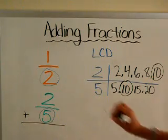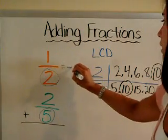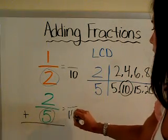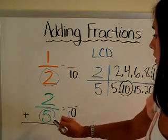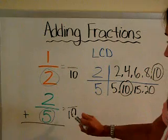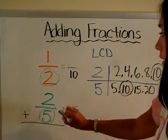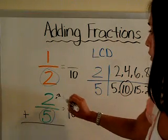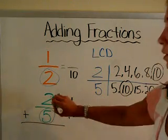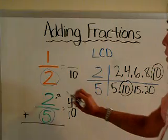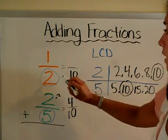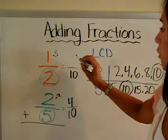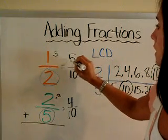So now we're ready to solve our problem. For one-half, we can use the denominator of 10. To get from 5 to 10, we divided by 2, so we're going to multiply the numerator — the top of the fraction — by 2. For the other fraction, we divided and got 5, so we'll multiply the numerator by 5 to get 5.